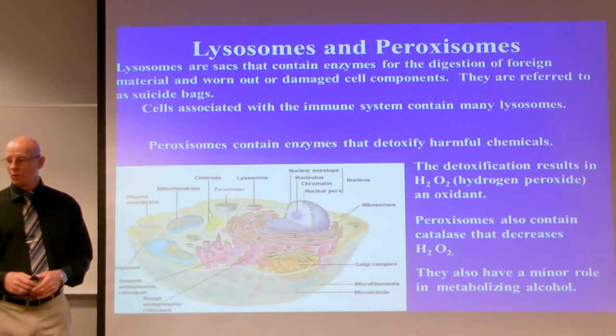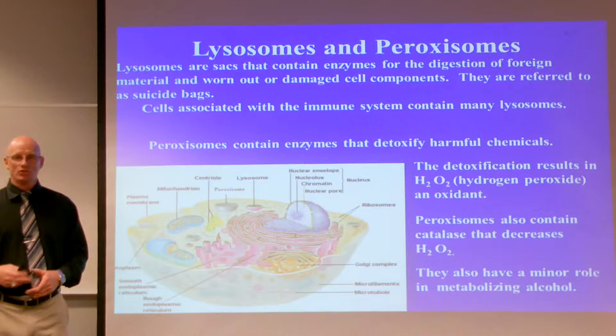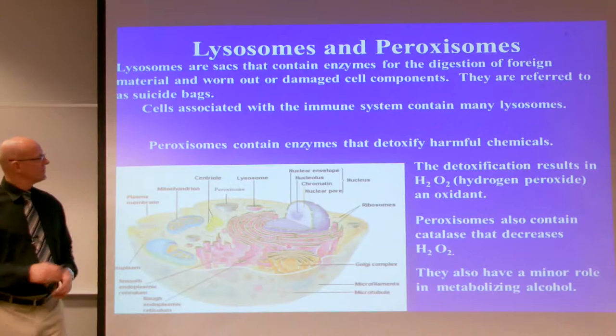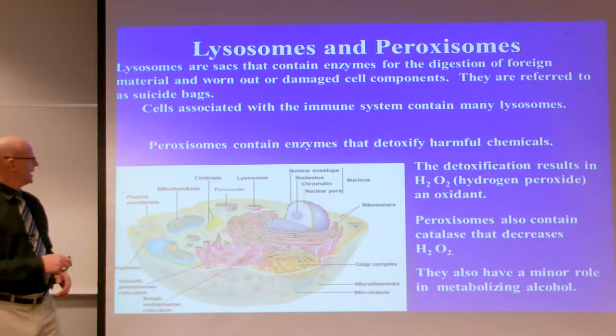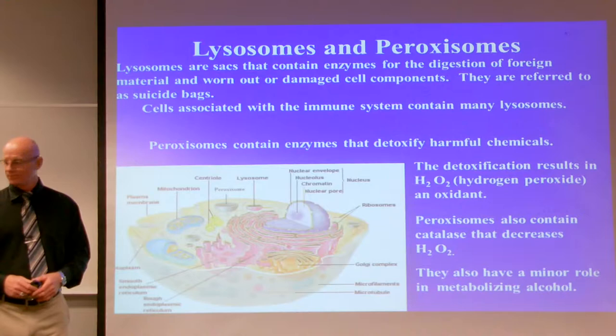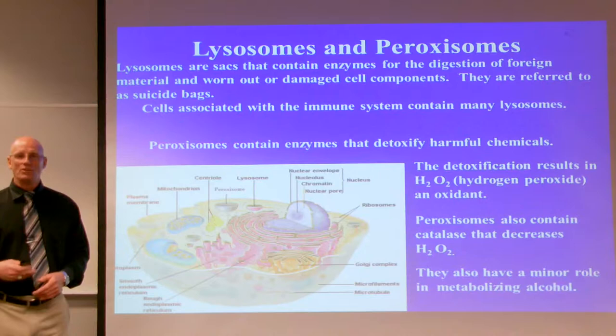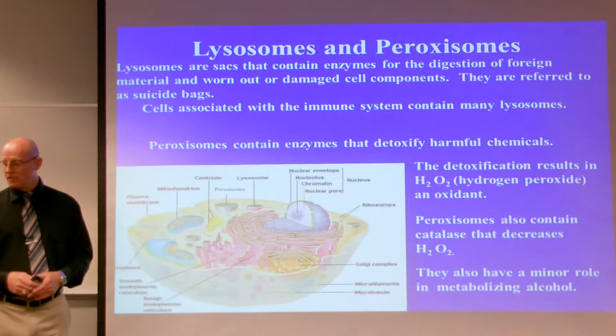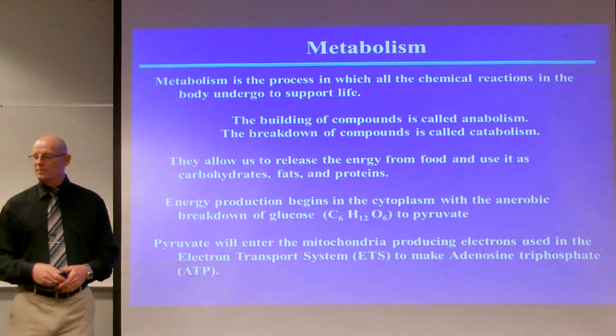Lysosomes are sacs that contain enzymes for the digestion of foreign material and worn out or damaged cellular components. They're referred to as suicide bags because the enzymes within are destructive. The cells associated with the immune system contain many lysosomes. Peroxisomes contain enzymes that detoxify harmful chemicals. The detoxification results in hydrogen peroxide, H₂O₂, which is an oxidant that could damage the lipid bilayer. So peroxisomes also contain a catalyst that decreases the hydrogen peroxide, and they have a minor role in metabolizing alcohol.